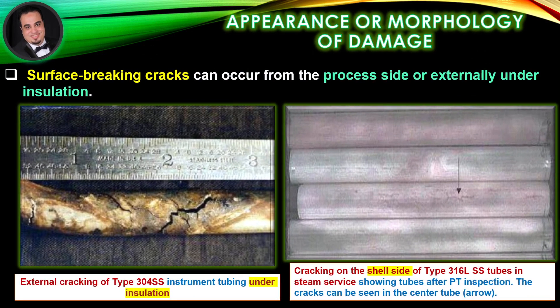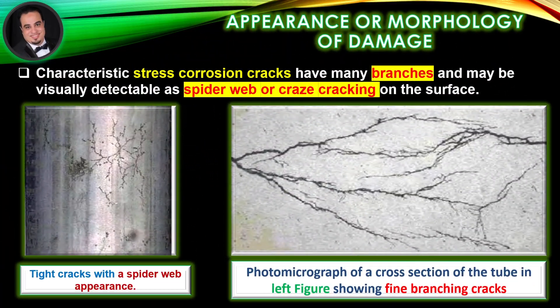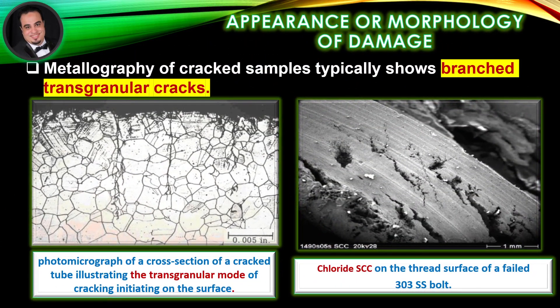Appearance or morphology of damage, as illustrated in figures: Surface breaking cracks can occur from the process side or externally under insulation. Characteristic stress corrosion cracks have many branches and may be visually detectable as cracking on the surface. Metallography of crack samples typically shows branched transgranular cracks.